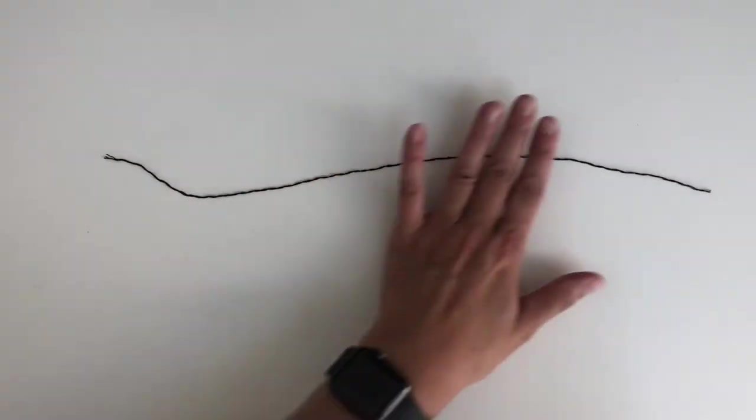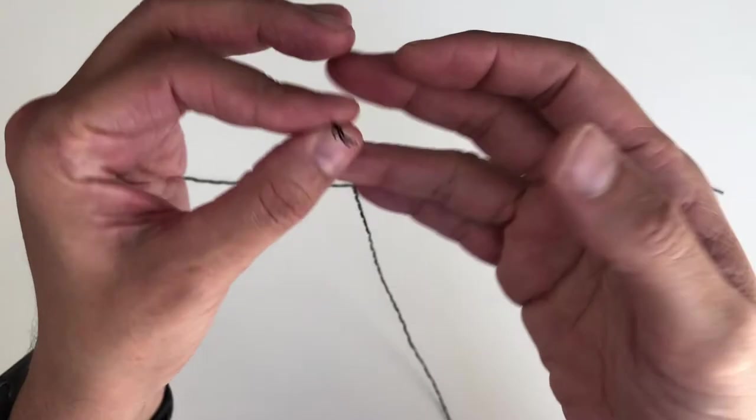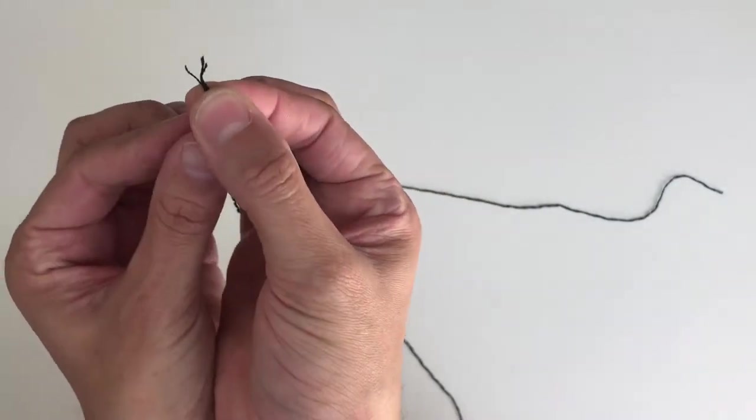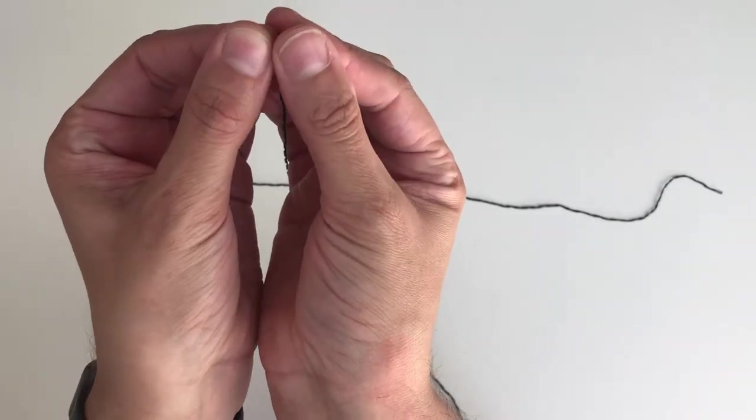With this other half of six-stranded thread, I am going to separate one more strand. Again, I will pinch those ends to separate and pull them apart very slowly.